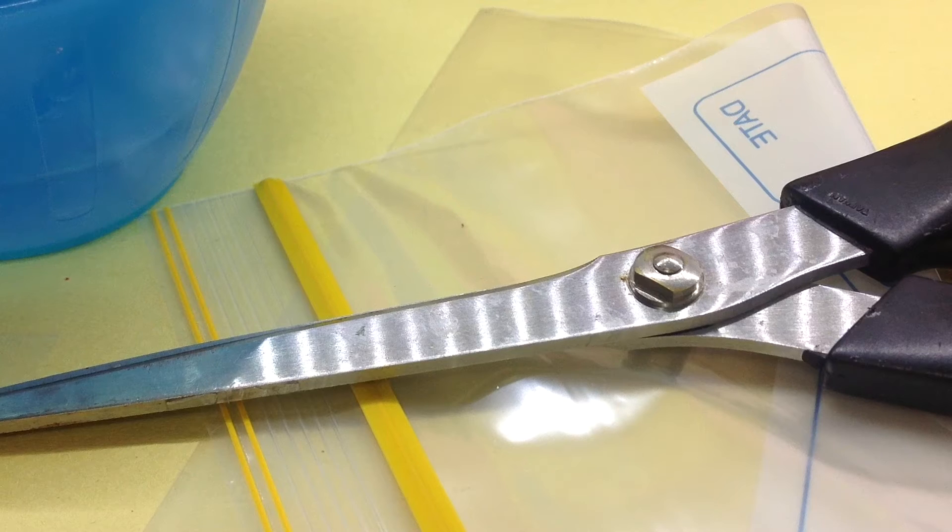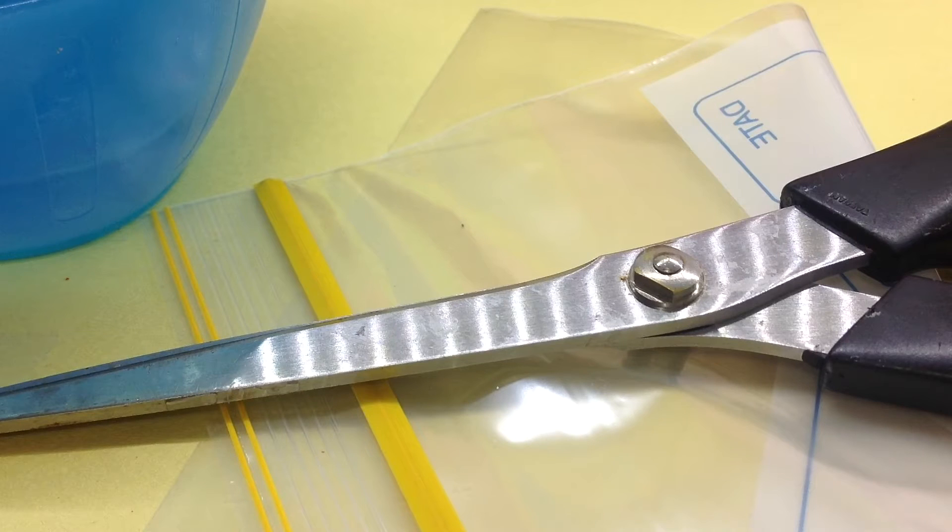You're going to need two bowls, one with water and one without. You're also going to need a little ziplock baggie and a pair of scissors. This is used as your piping bag. If you also want to have a little piping tip, you can also do that as well.